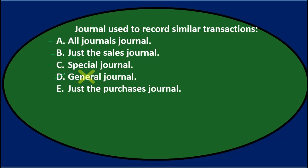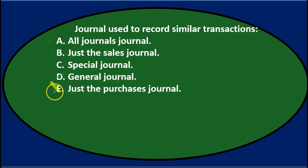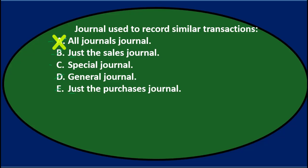E says just the purchases journal. Both B and E use the word 'just' — they each describe one type of similar transaction, sales and purchases respectively, but they can't both be the broader answer. So I'll eliminate B and E, leaving A and C. All journals journal doesn't seem to be a real term, so I'll cross that out too, leaving C: the special journal.